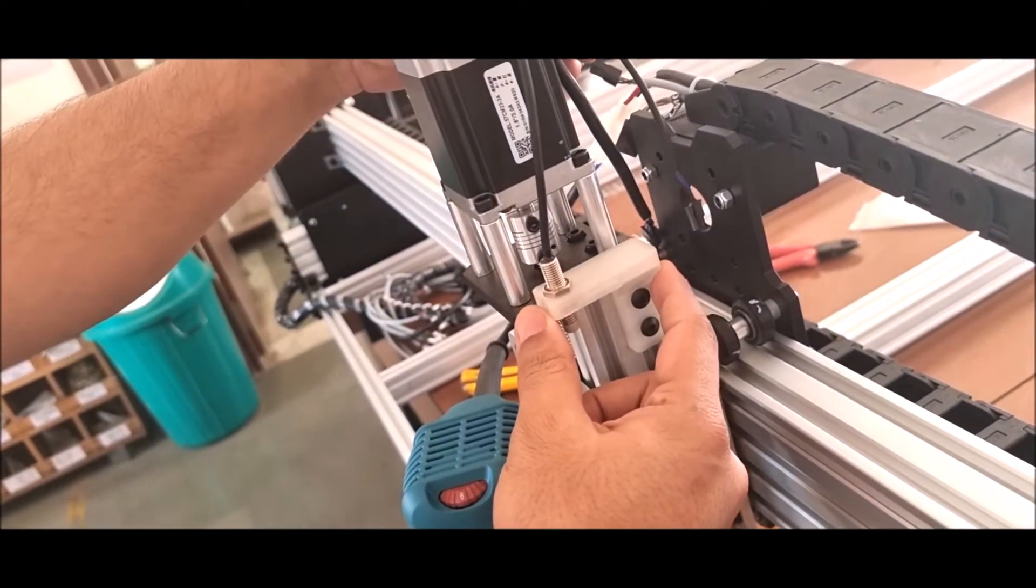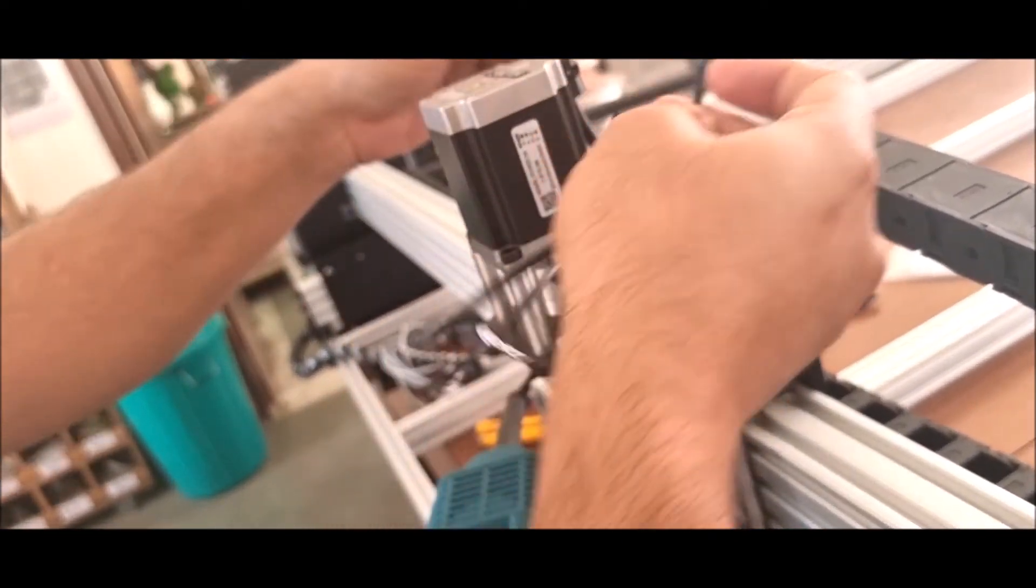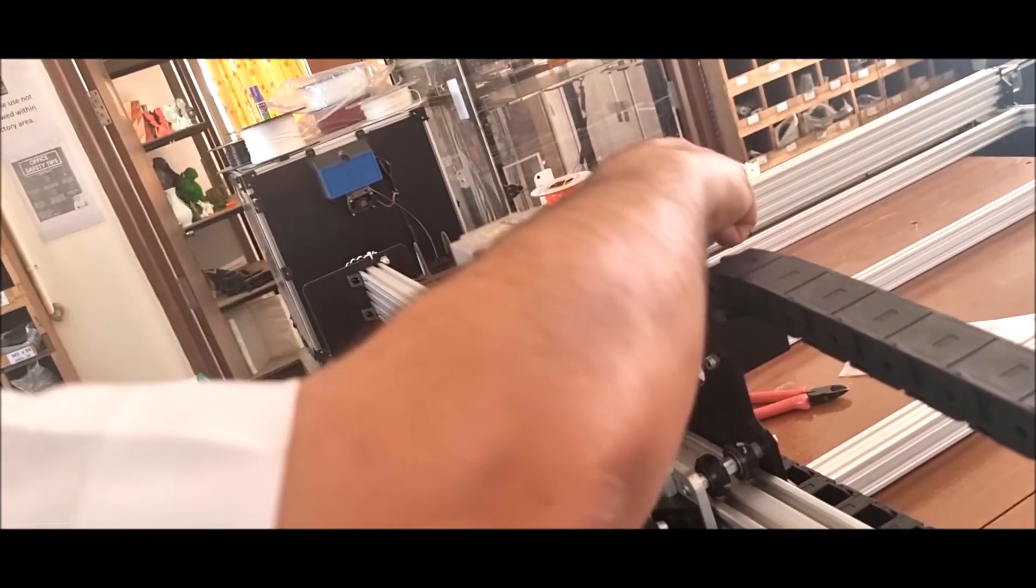This is how you mount your Z-axis end stop. After mounting, connect this terminal, this connector, to the Z-axis wiring here.